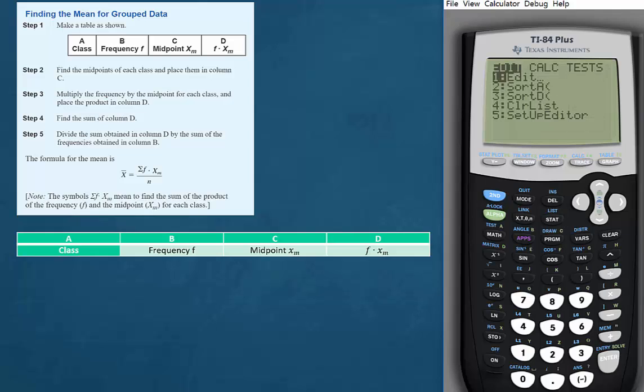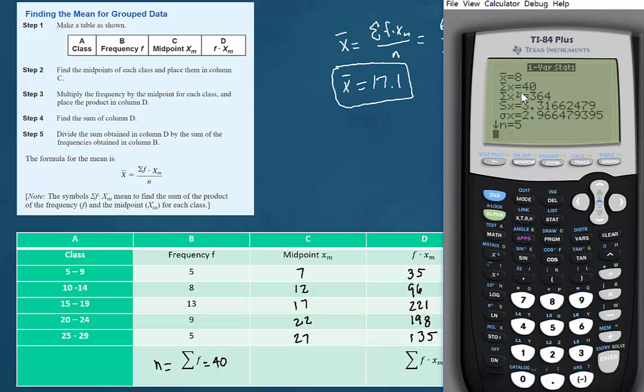So we'll go to stat, over to calc, 1 for one variable statistics, and then calculate for list 1. And then we find that the sum is 40, just as we found when we added the values manually.